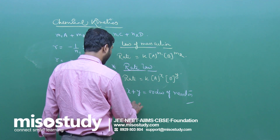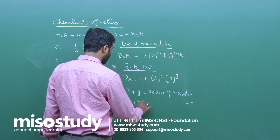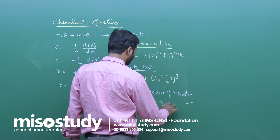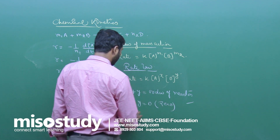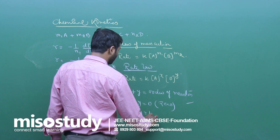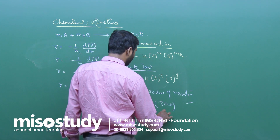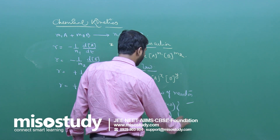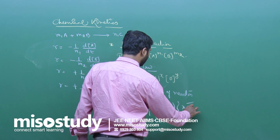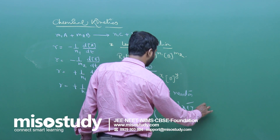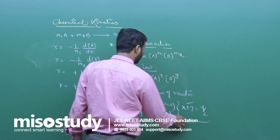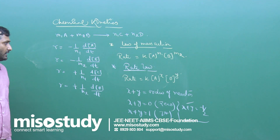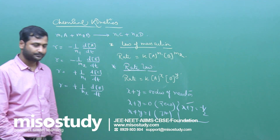For example, if x + y = 0, it is a zero order reaction. If x + y = 1, that is a first order reaction. If x + y = −½, that is a minus half order reaction.